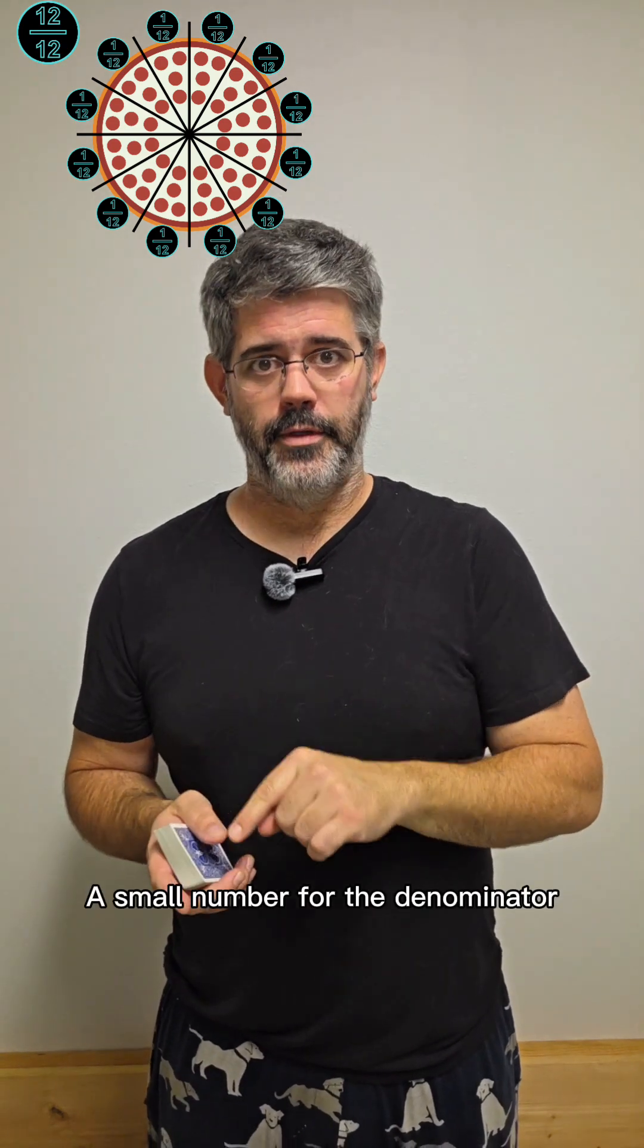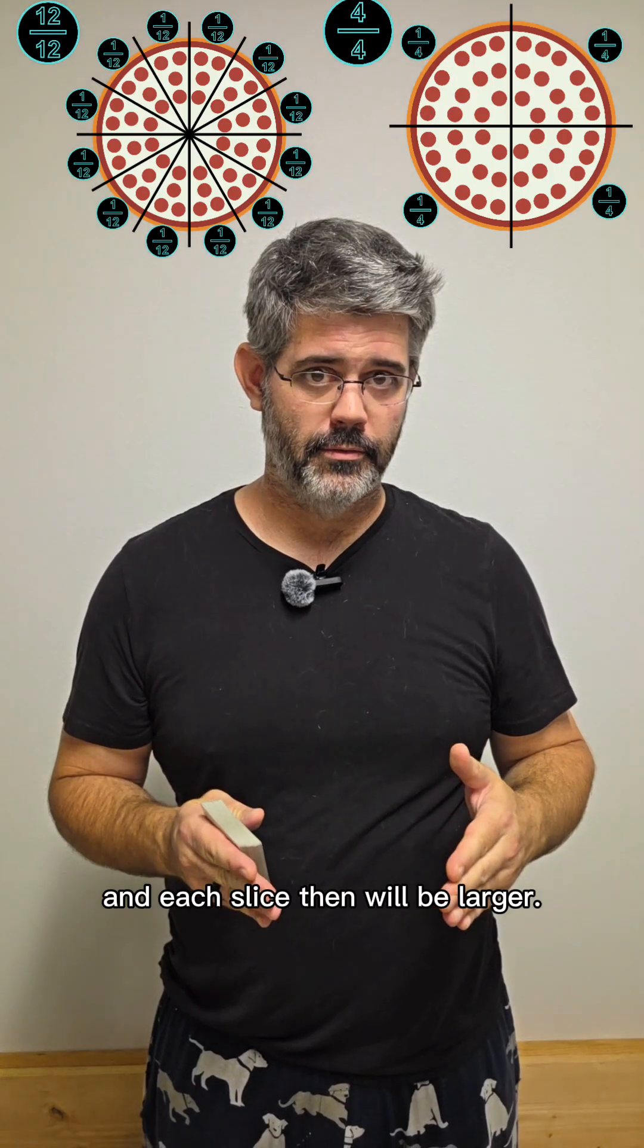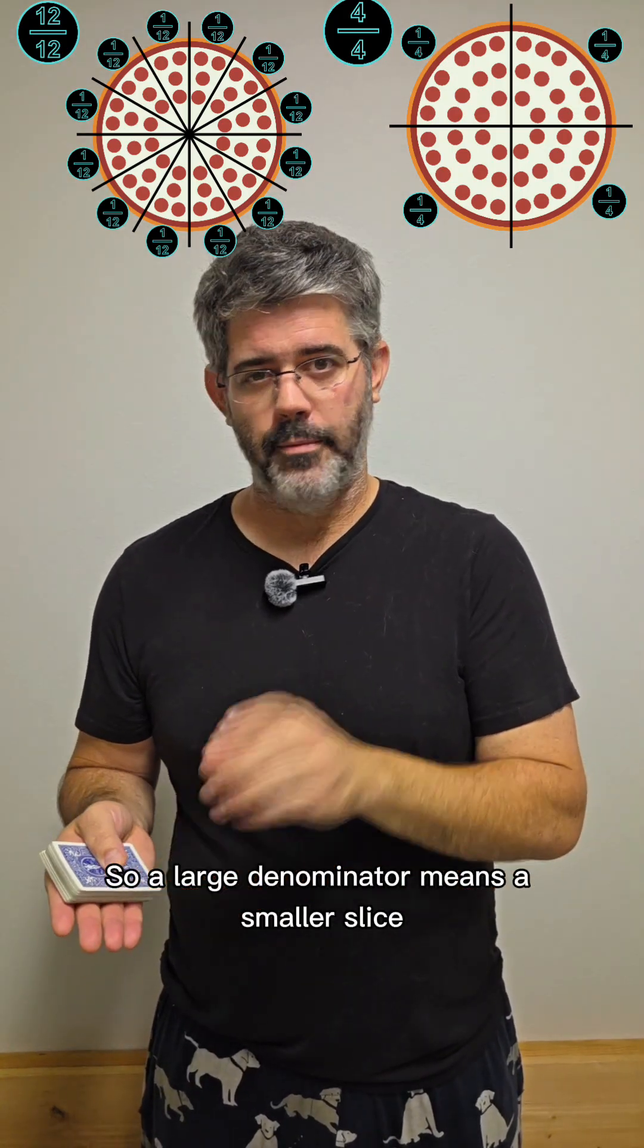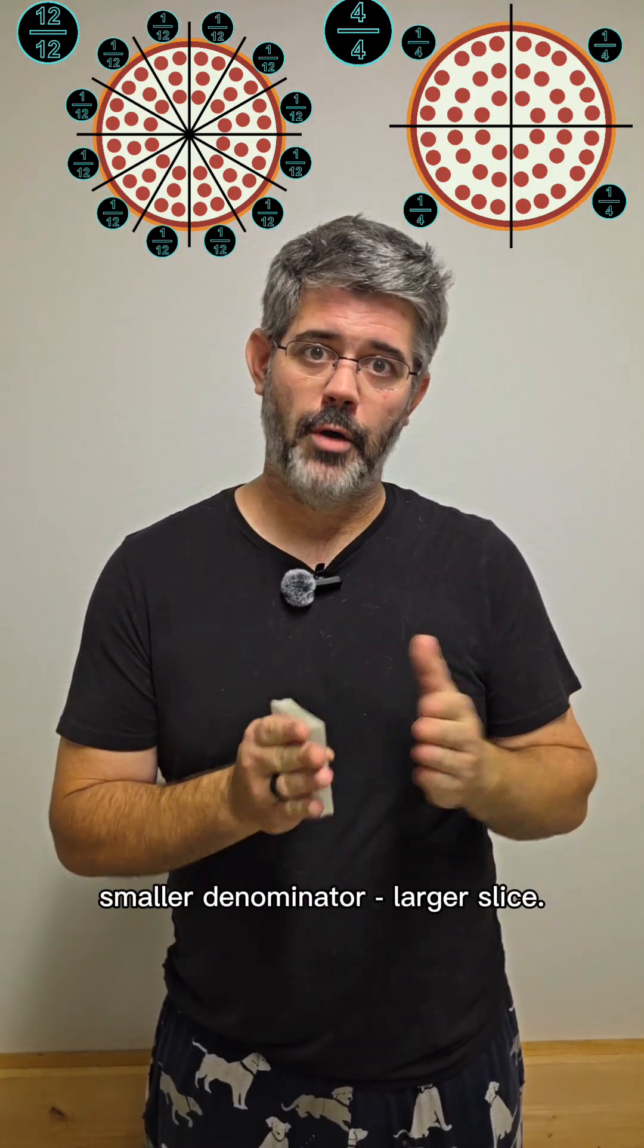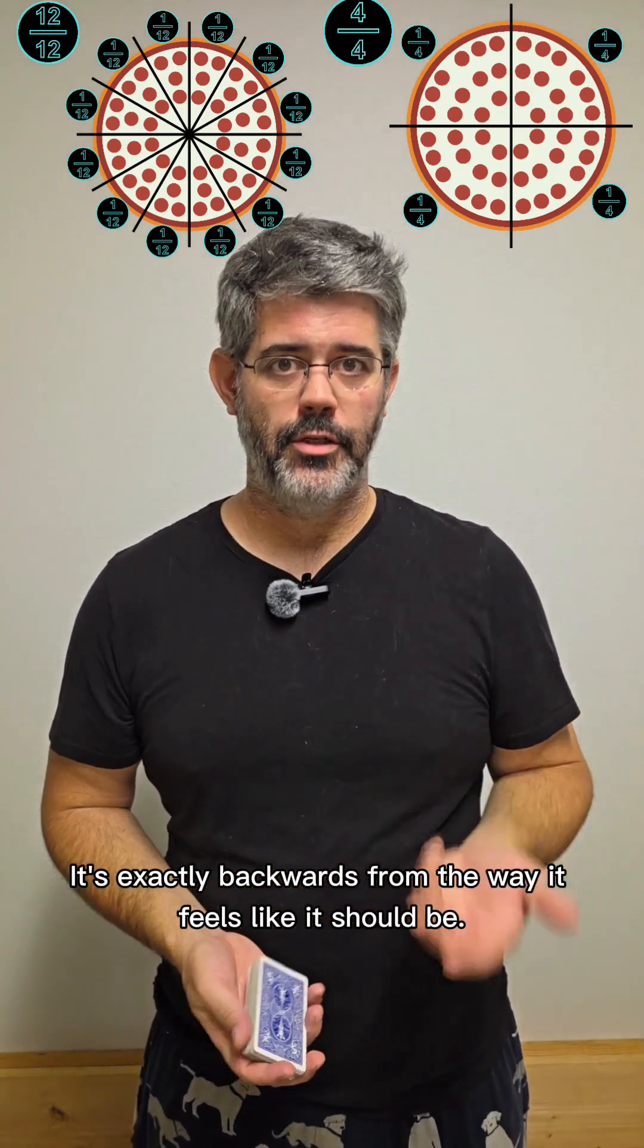A small number for the denominator means that the pizza has only been cut a few times and each slice then will be larger. So a large denominator means a smaller slice. Smaller denominator, larger slice. It's exactly backwards from the way it feels like it should be.